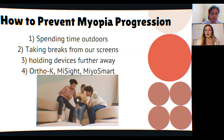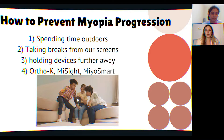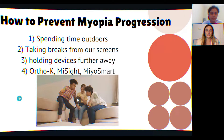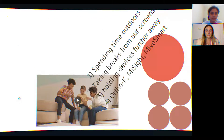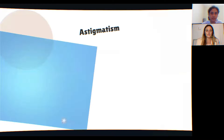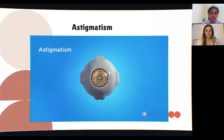Ortho-K lenses are hard contact lenses you sleep in — you wake up, take them out, and have corrected eyesight for the day without needing glasses or contacts. This has been shown to slow the progression of myopia. There are also other soft contact lenses and specific glasses lenses that help slow myopia progression.